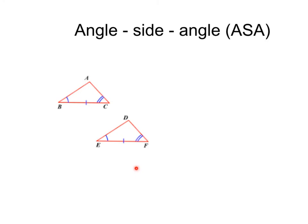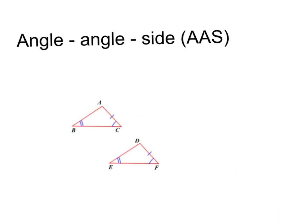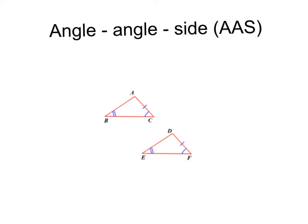Moving forward, we come upon the angle-angle-side congruence theorem. In this case, we have one angle, another angle, and a side congruent to another angle, another angle, and a side. When these congruences correspond, then again, these triangles are congruent.